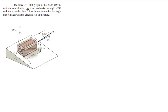It's parallel to the XZ plane and it makes a 10 degree angle with DB, so this angle right here is 10 degrees. Find the angle that F makes with the diagonal AB — so this is A on this side of the box and this is B. Going through the box there's a vector AB and they want you to find the angle that the force makes with it.